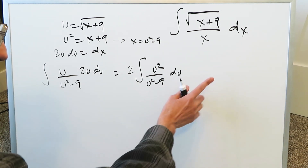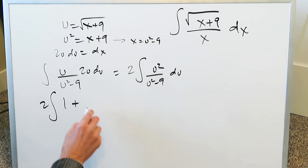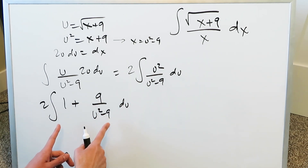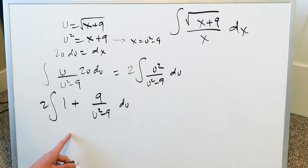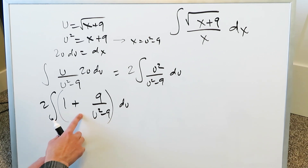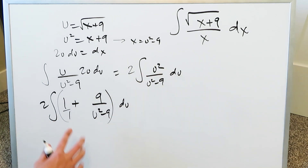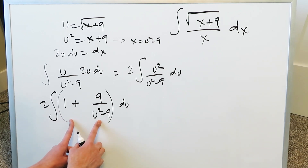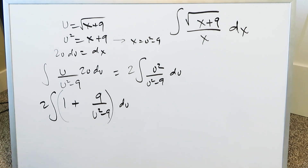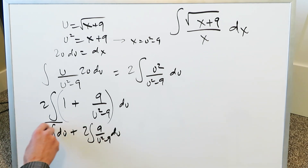Now this next step is the hardest. You have to think of some fraction addition which would have led you to this, and that would be nothing more than 1 plus 9 over u squared minus 9 du. This is the hard part because to envision that these two expressions are equivalent is difficult. Imagine you do a common denominator of u squared minus 9: the 1 gives u squared minus 9, plus 9 on top, which yields u squared divided by u squared minus 9. So these two fractions are equivalent. In my opinion, this step is the hardest step of this rationalizing substitution technique. But now you've created a plus sign and two integrals: 2 integral du plus 2 integral of 9 over u squared minus 9 du.